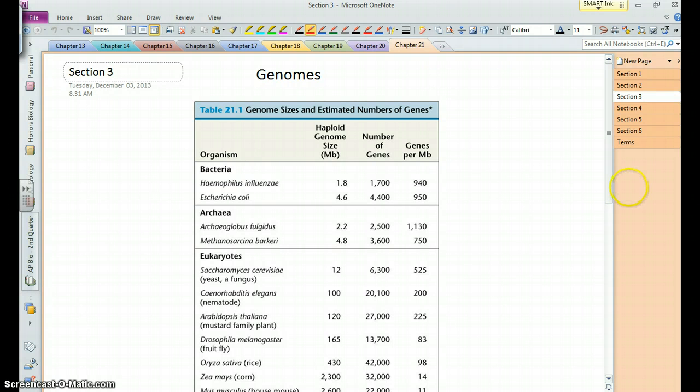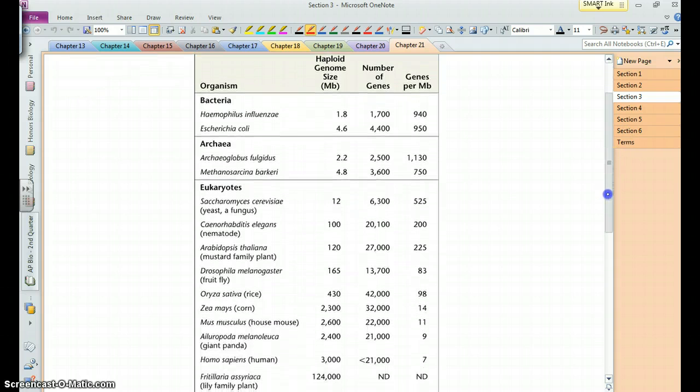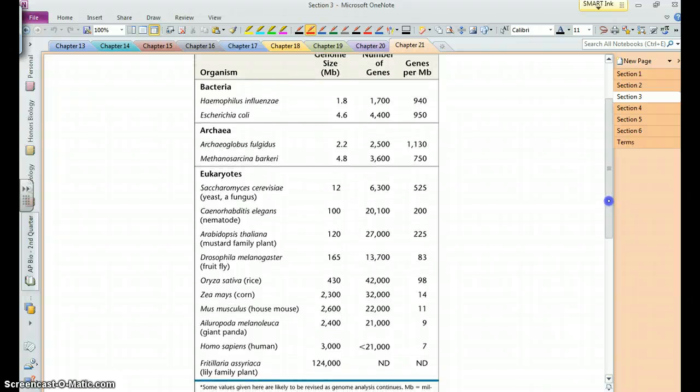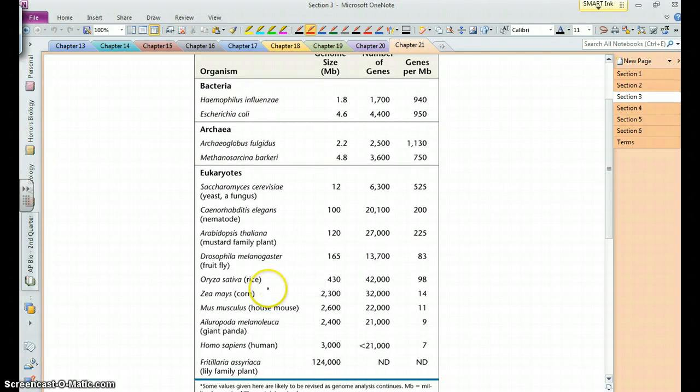But now you'll notice that while the number of genes increases when we go up to eukaryotes, there's not an exact fit between the genome size and the number of genes because you can see rice, for example, has a relatively small genome compared to animals but it has quite a few genes. You can see in humans we have 3 billion base pairs in our genome but around slightly less than 21,000 genes, so we have fewer genes as far as we can tell than rice or corn but a larger genome.